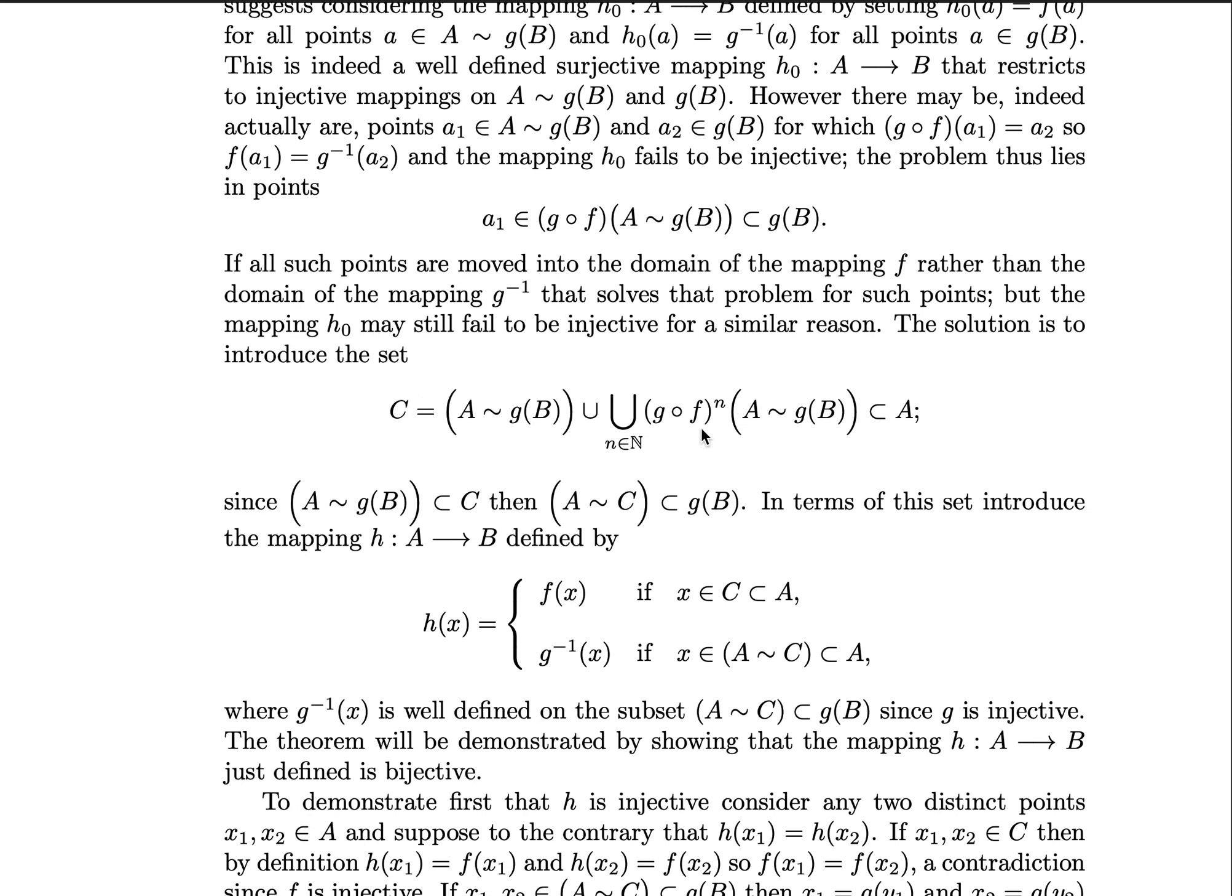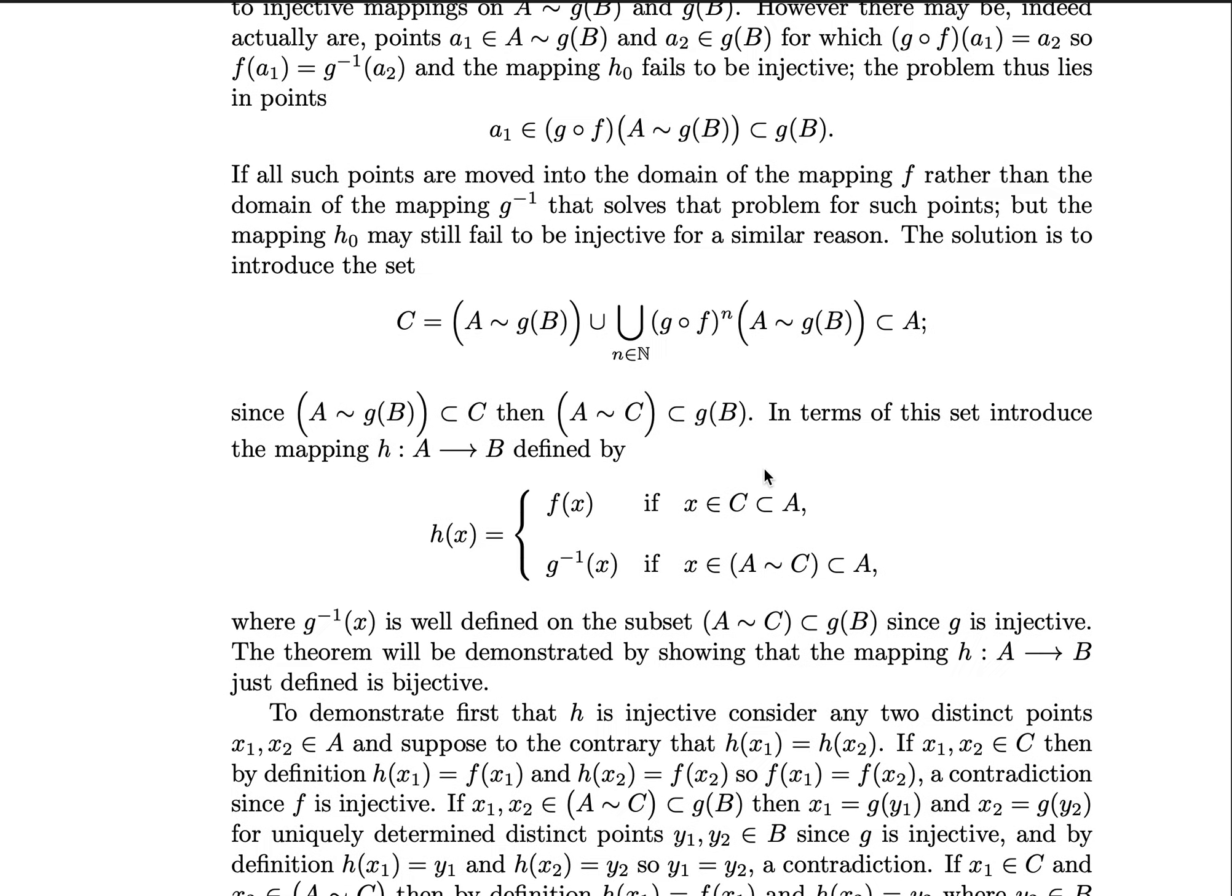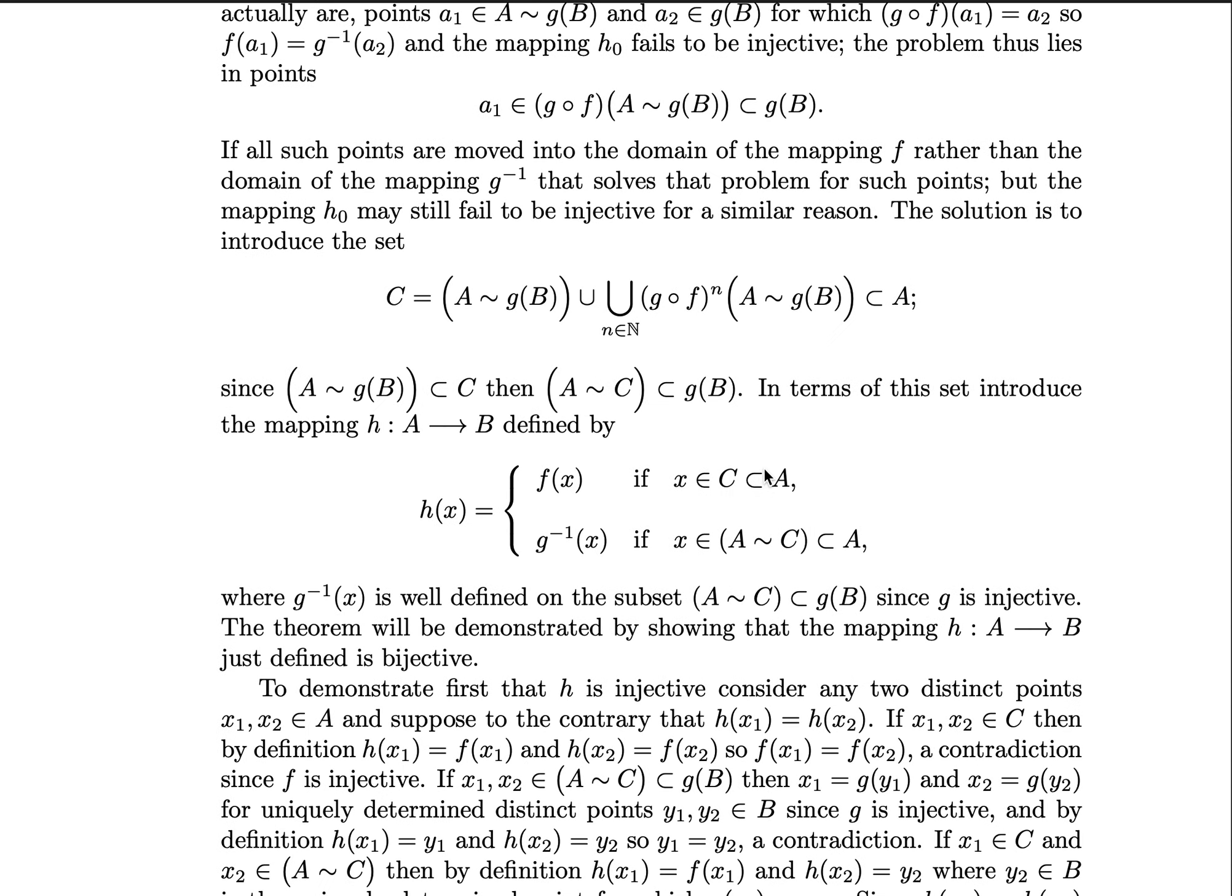So it's usually useful to draw a picture here between A and B, and note when elements in A except g(B) can be set to a problematic domain under (g ∘ f)ⁿ for all n.